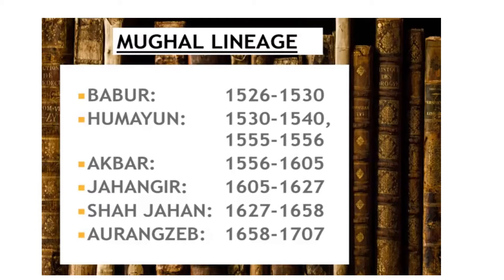Humayun also ruled from 1555 to 1556. After that Akbar came — he was a very powerful ruler who ruled from 1556 to 1605. Then Jahangir came; he ruled from 1605 to 1627.